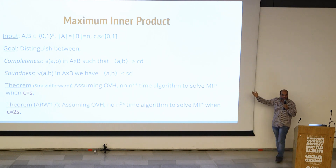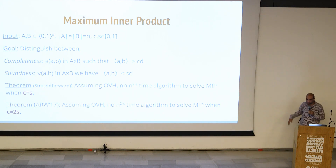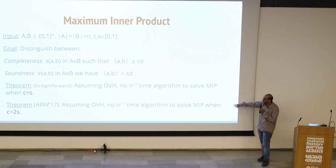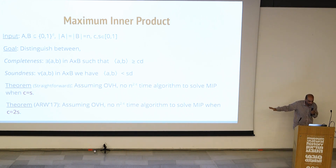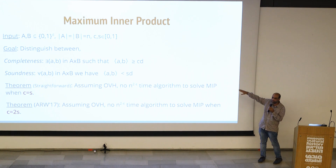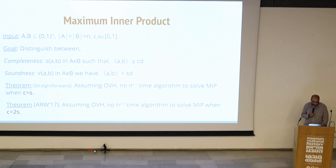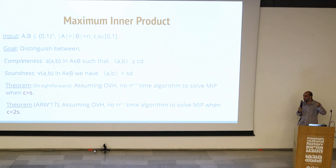There is a straightforward reduction from orthogonal vectors showing you need time at least N to the 2 minus epsilon for every epsilon. What Abboud and Ryan Williams showed was that even if you want a gap of 2 — distinguishing when the inner product is at least C times D against at most C times D over 2 — this still requires N to the 2 minus epsilon time. The way they did it was to arithmetize each point over some finite field, run the sum-check protocol from PCP, and look at the transcript of this protocol, which has the gap because of the codes used.